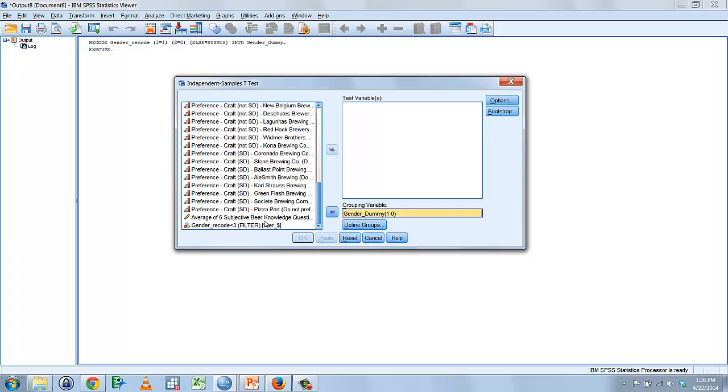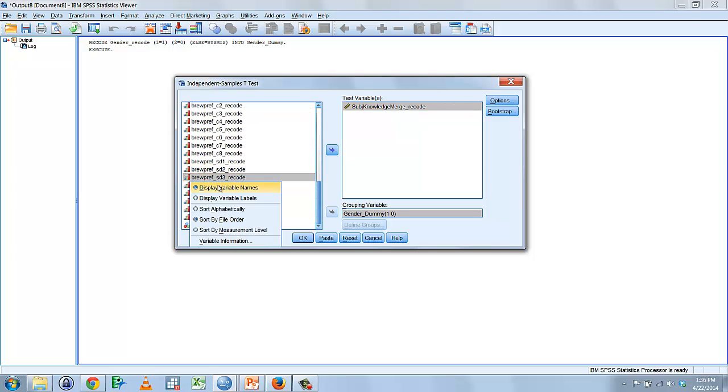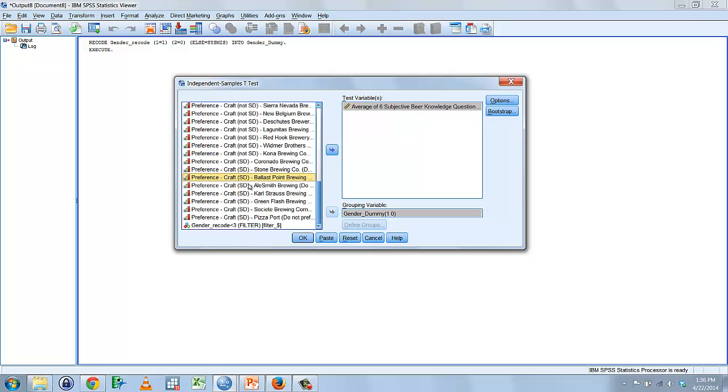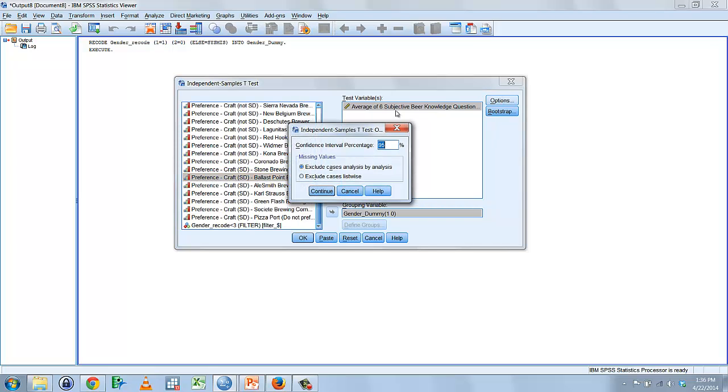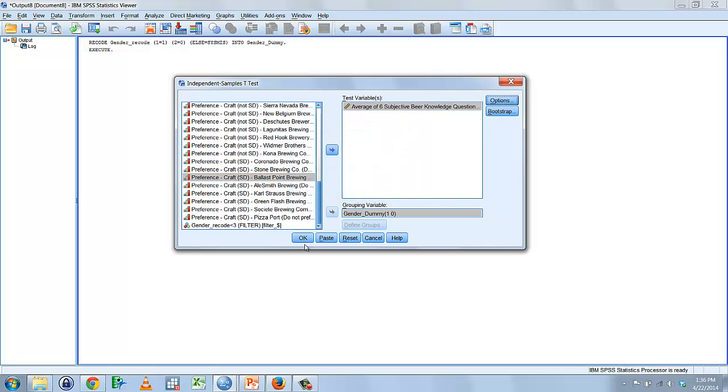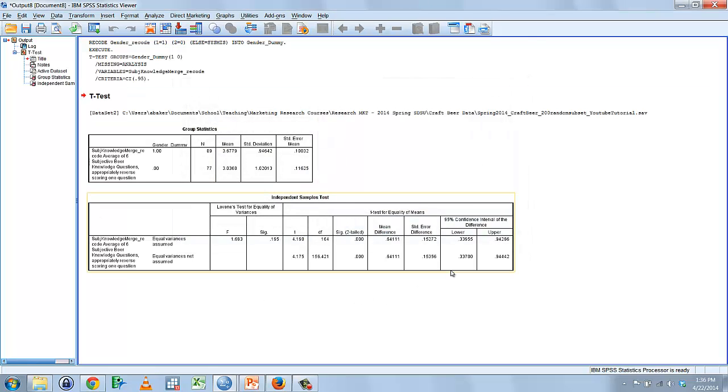And our test variable is our subjective knowledge average question. So we have that test variable here at the bottom. You can toggle between the variable names and variable labels with right-clicking if you were trying to look for it. For options, we'll keep our confidence interval at 95, and we will go ahead and run our analysis.